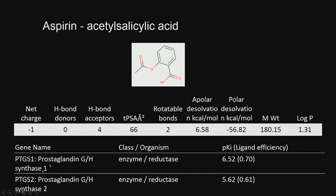Some of the targets for aspirin are prostaglandin synthase 1 and prostaglandin synthase 2, which are called cyclooxygenase 1 and cyclooxygenase 2. These enzymes are reductase-type enzymes. These are some properties of this particular molecule — they are called properties, descriptors, structural features. We call them different names: features, properties, descriptors.